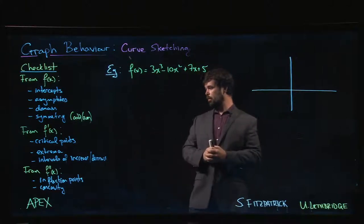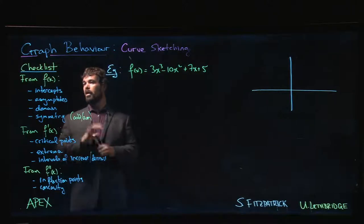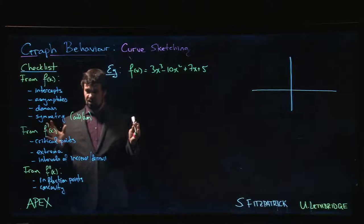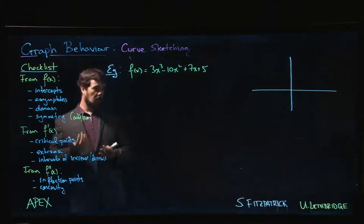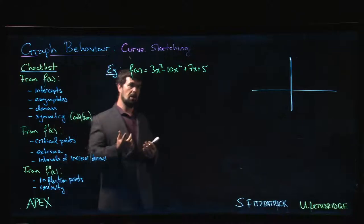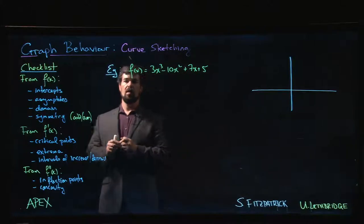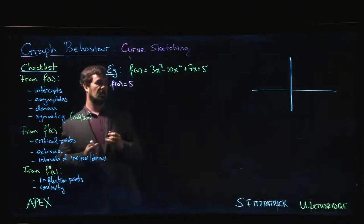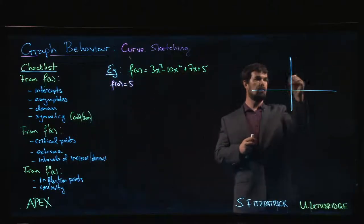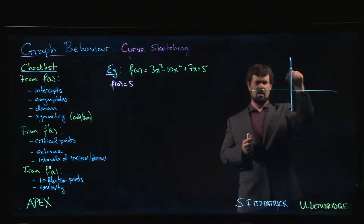To put together the graph of a function, there are a number of things that you need to do. I've put this checklist here on the side—we'll refer to this for each problem. From the original function, before you even take a derivative, you get a fair amount of information. You can probably figure out where the x and y intercepts are. The y intercept we can figure out: f of 0 is equal to 5. That's the point we can plot.